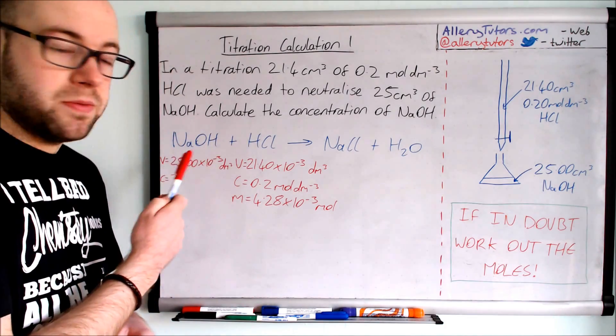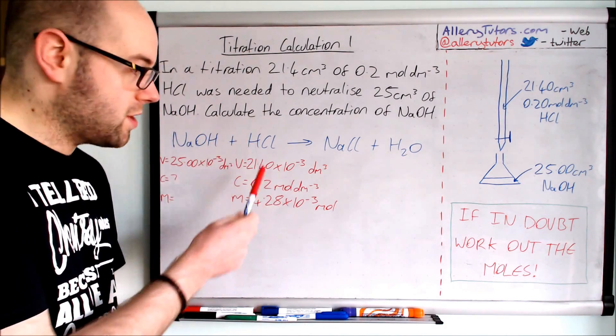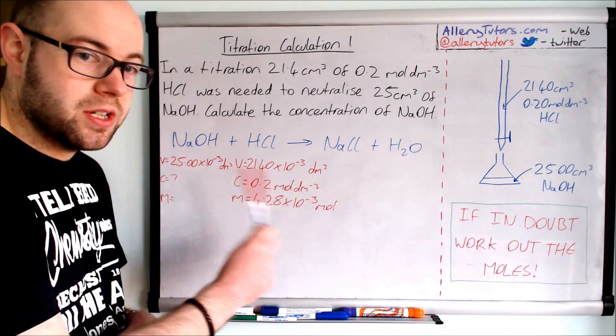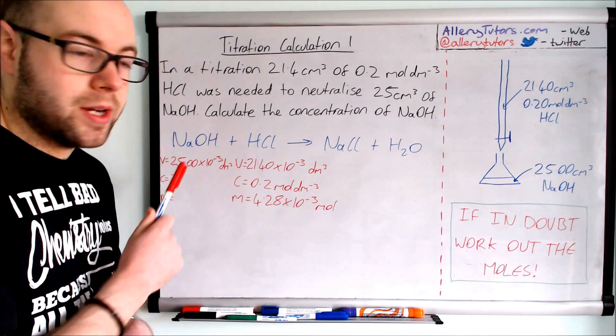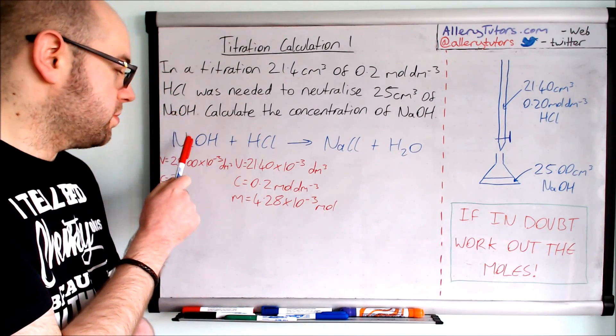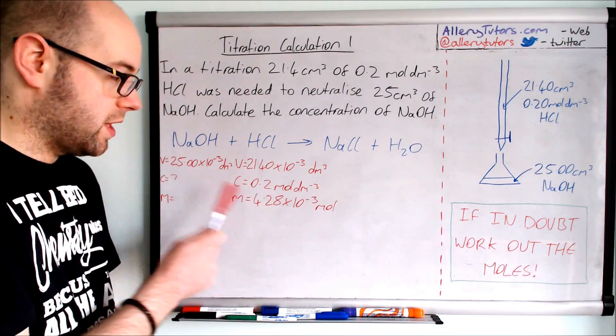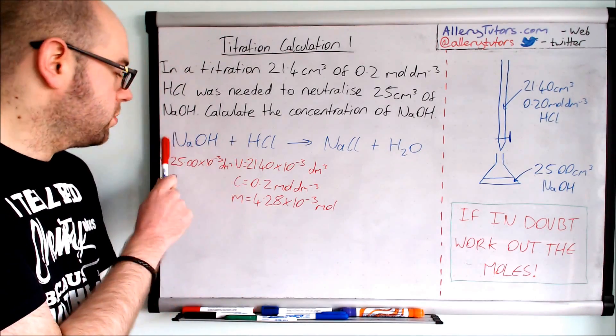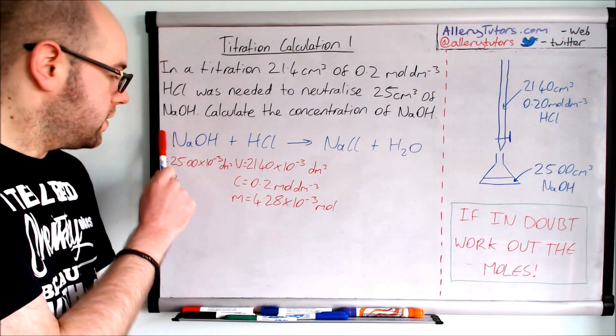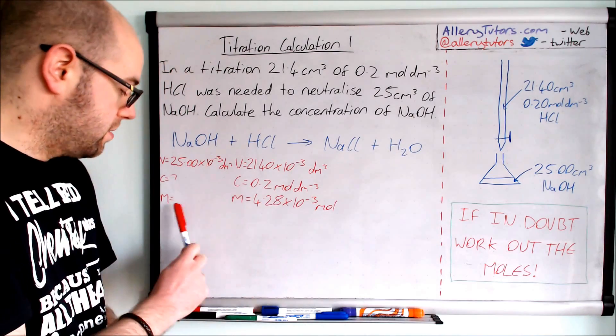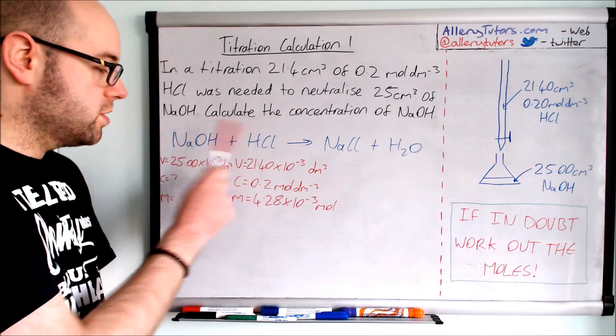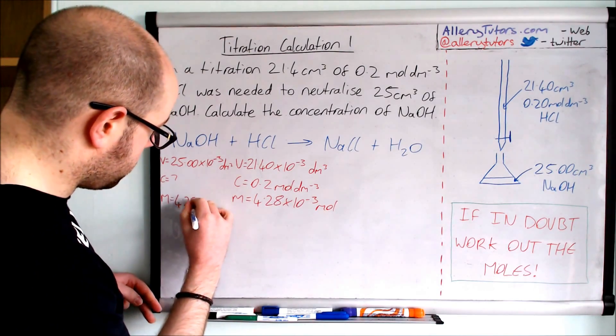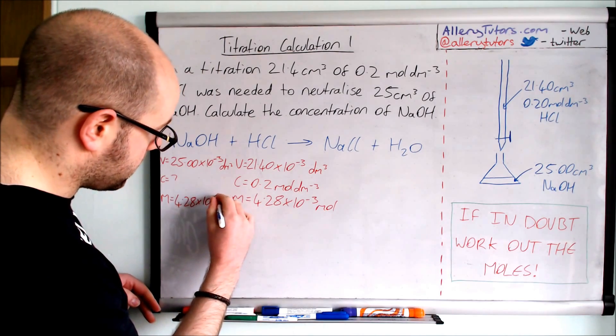The equation now comes into it. We've got a one-to-one equation. Because we know the moles of one substance, we can work out the number of moles of any substance in our equation. We need to work out the number of moles of sodium hydroxide. The number of moles here is exactly the same as the number of moles up here because we've got a one-to-one ratio. So it's 4.28 times by 10 to the minus 3 moles.